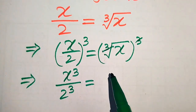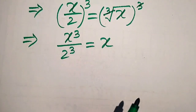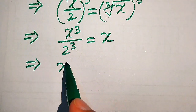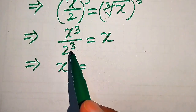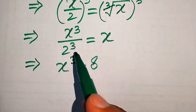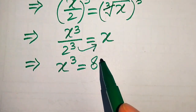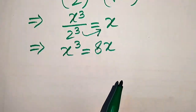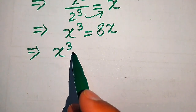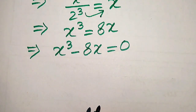The cubed and cube root cancel and we get x. Now we move this value to the right hand side: x cubed equals 2 cubed, and 2 cubed becomes 8. When we move 8 to the right hand side it becomes 8 times x. Moving 8x to the left hand side gives x cubed minus 8x equals 0.